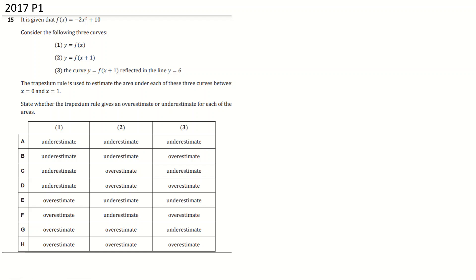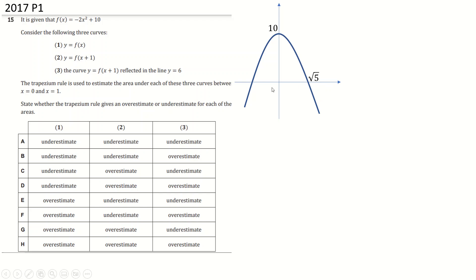Now we're going to look at overestimates and underestimates. The sensible thing is to sketch this curve — it's just an upside-down quadratic moved up 10 places roughly, like this. I worked out its roots at root 5, which is vaguely helpful. Estimating between 0 and 1, with 1 being roughly here because root 5 is a bit bigger than 2, this is clearly a concave graph, so it's going to be an underestimate. The straight lines, no matter how many trapeziums you use, would be underneath this curve. So we discount all the other options for case 1, the original graph.